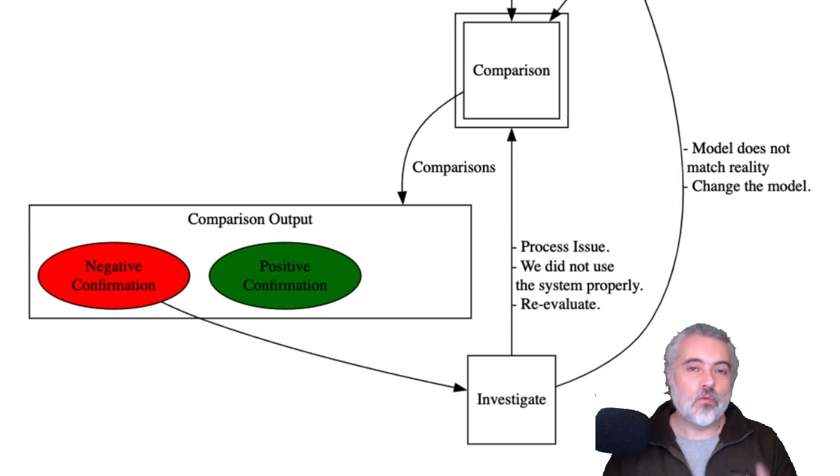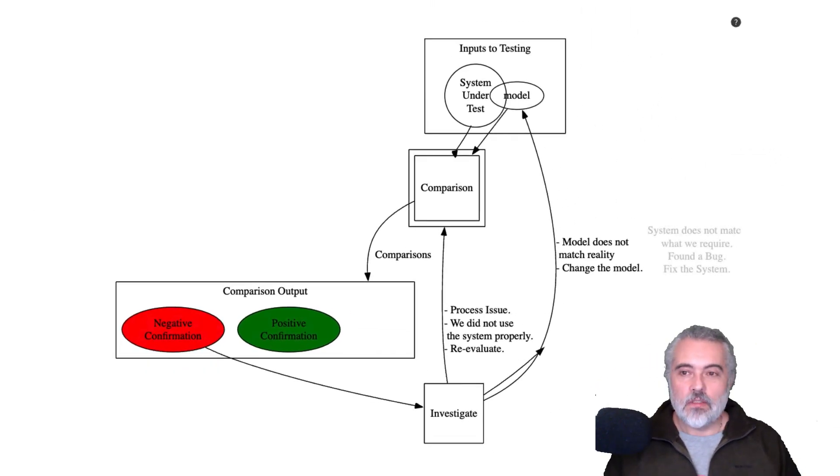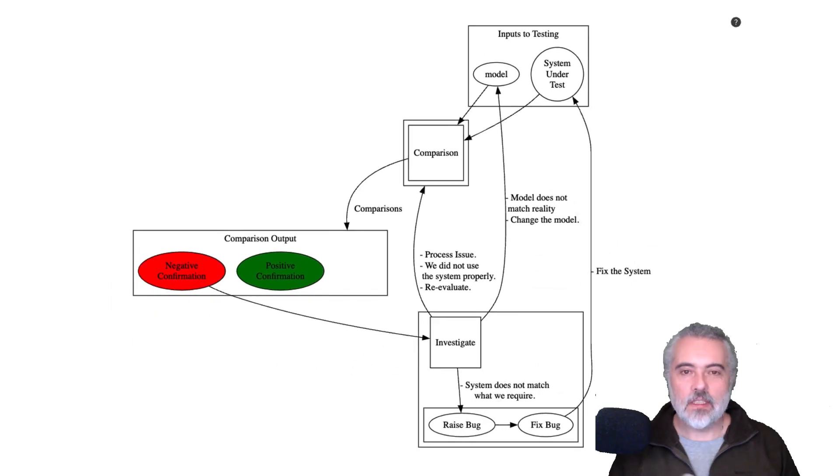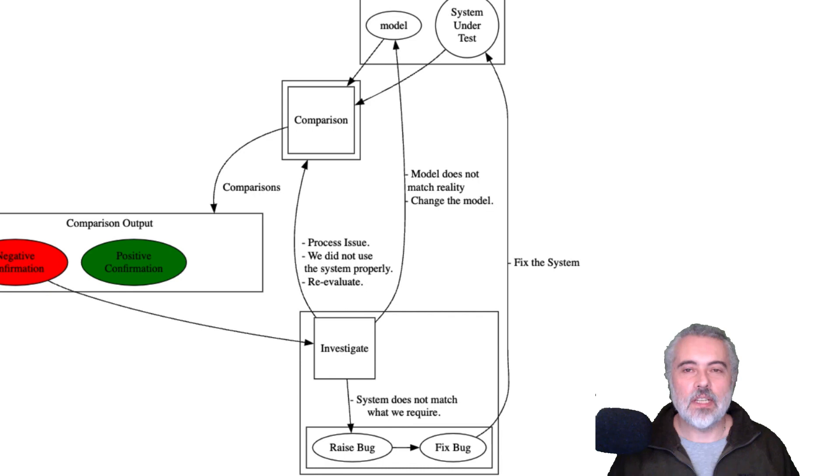And if the process was wrong, then we can redo that process. And that changes our model, our understanding of how we test or how we have to test this particular system with this particular model to get the information that we want. Now, sometimes if we're working with the system and we find an issue with the system, we can just fix it straight away. But sometimes we don't have that direct action on the project. So we have to have a process for writing down the problem, passing the problem on to someone else to prioritize and then having someone else fix it. But ultimately that leads to changes to the system under test. And since the system under test is an input to testing, we go through that re-evaluation comparison and testing process again. Changes to the inputs trigger our actions for testing.